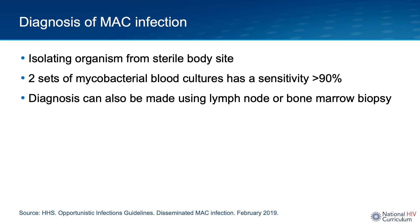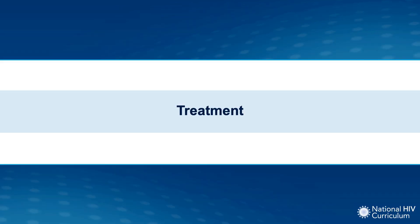The diagnosis of disseminated MAC is usually made by isolation of MAC from cultures of the blood, lymph node, bone marrow, or other normally sterile tissue or body fluids. Use of mycobacterial blood cultures has become the preferred method of diagnosis. Among persons with untreated disseminated MAC, obtaining two sets of blood cultures has a sensitivity of greater than 90%. MAC blood cultures are incubated for six weeks, but the lab may detect mycobacterial growth by day 14. Once there is growth, the mycobacterium species can be identified using DNA probes.